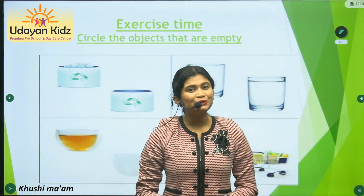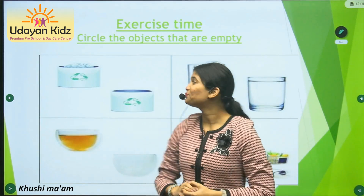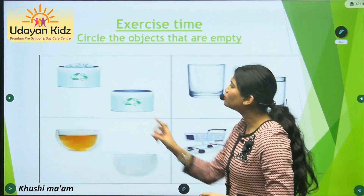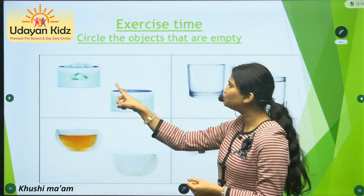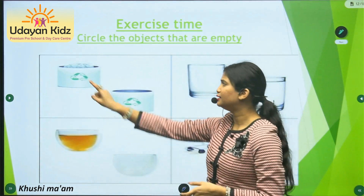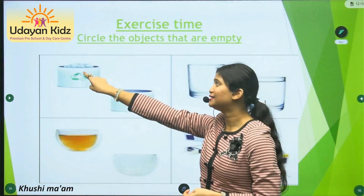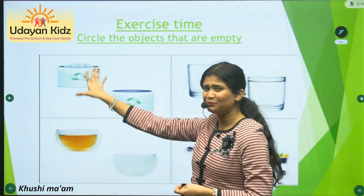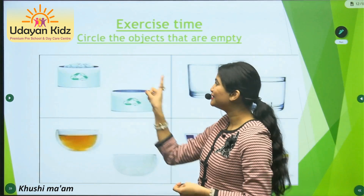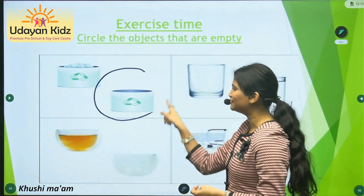Did you do it? Come on, let us check. So out of these two boxes, which one is empty? No, this has a lot of garbage inside. This one is empty. So we will circle this.